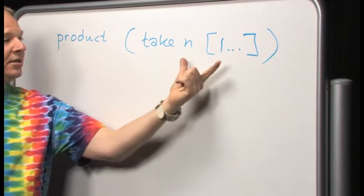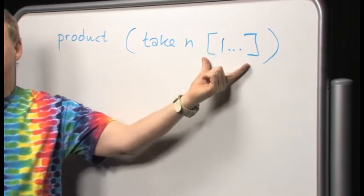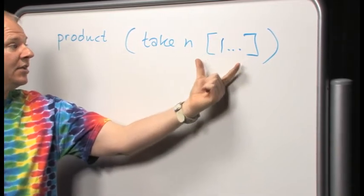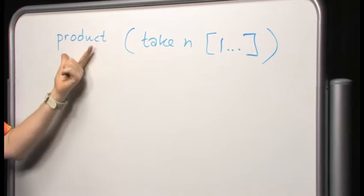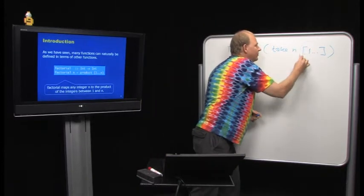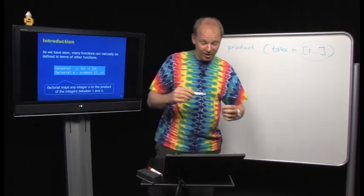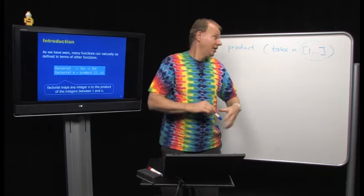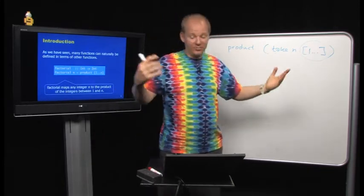Here you see what I mean by compositionality. I take an infinite list, take the first n elements, and then compute the product. This is something you couldn't do in a strict language because then this would not terminate — instead of returning the factorial, it would never terminate.